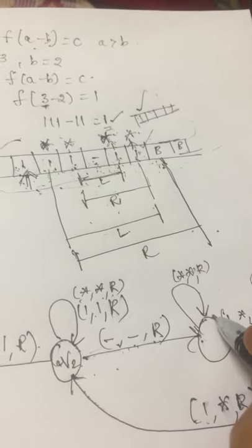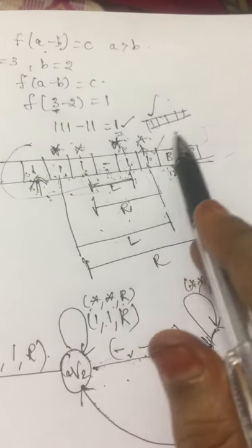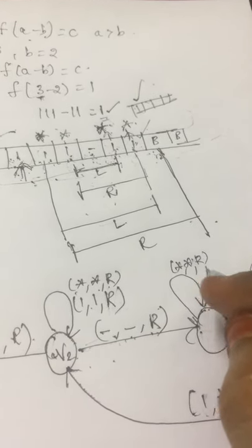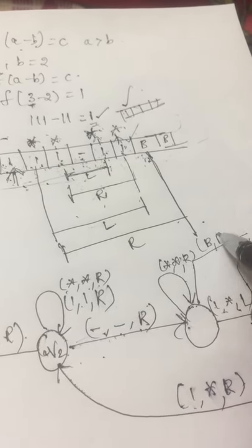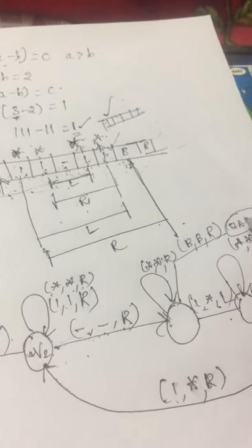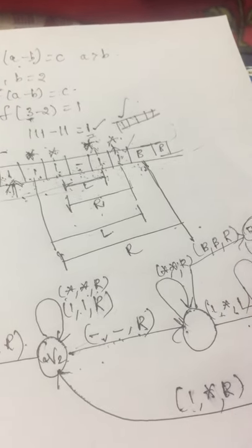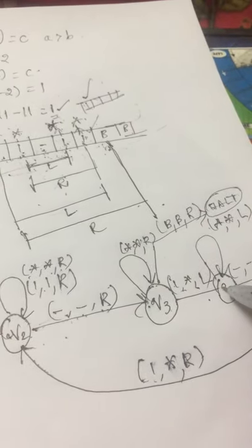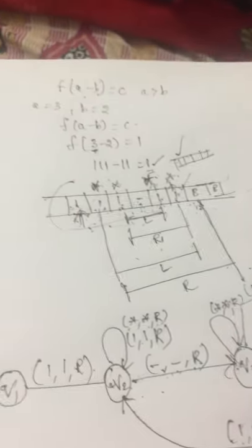We shall stop the procedure here. The star will remain as star and we move to the right direction. After getting a blank symbol, the blank will remain as blank — this is the halting state, or acceptance state. This is how we draw or construct a Turing machine for the subtraction of unary numbers.